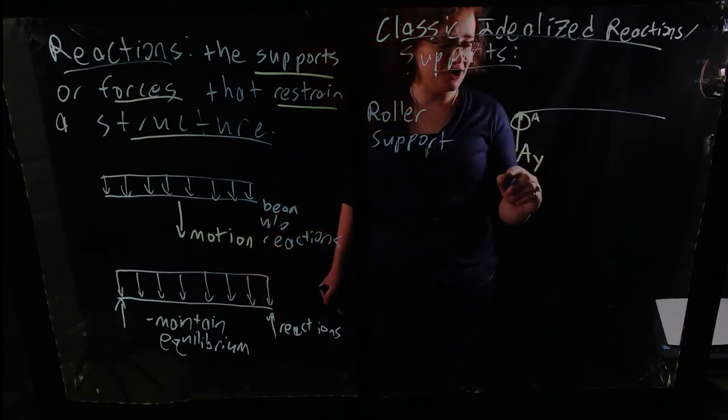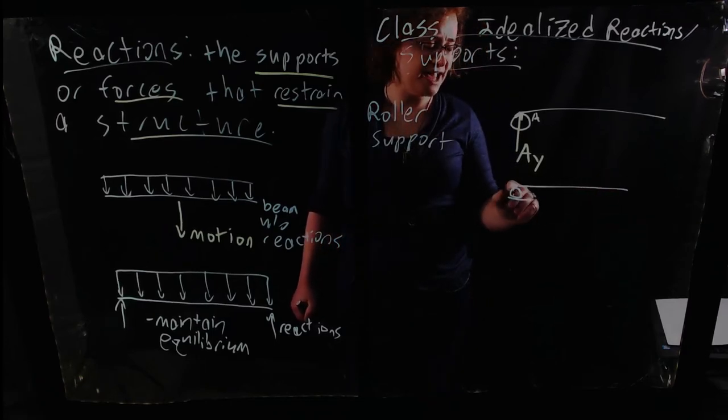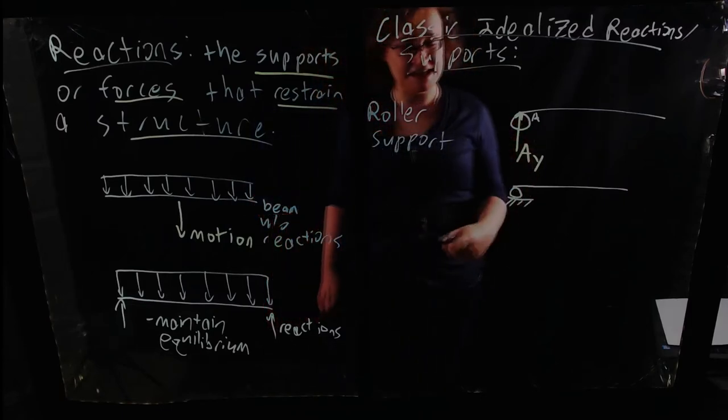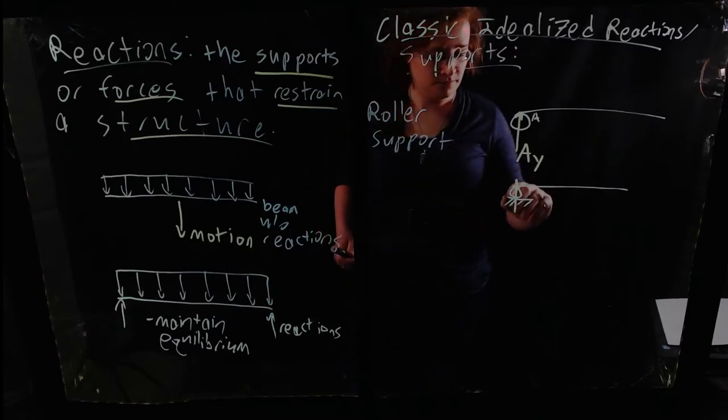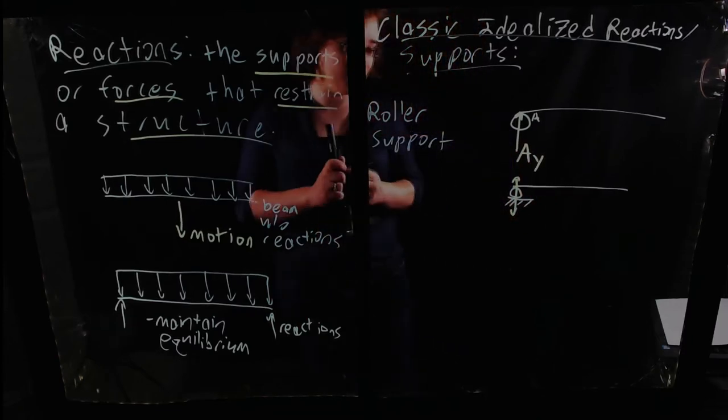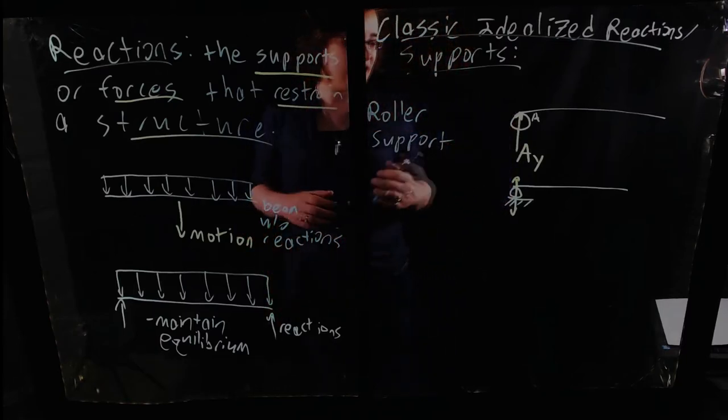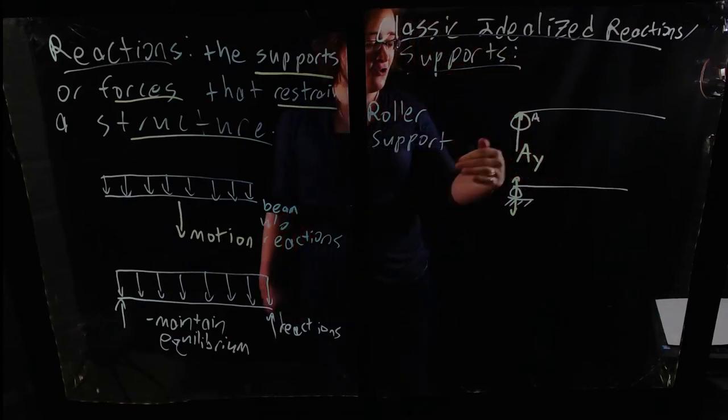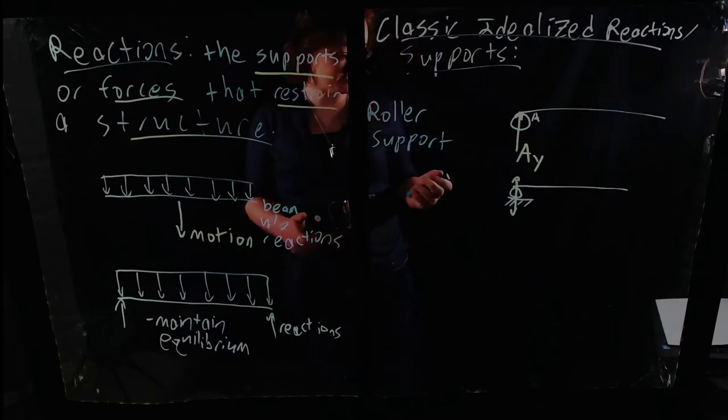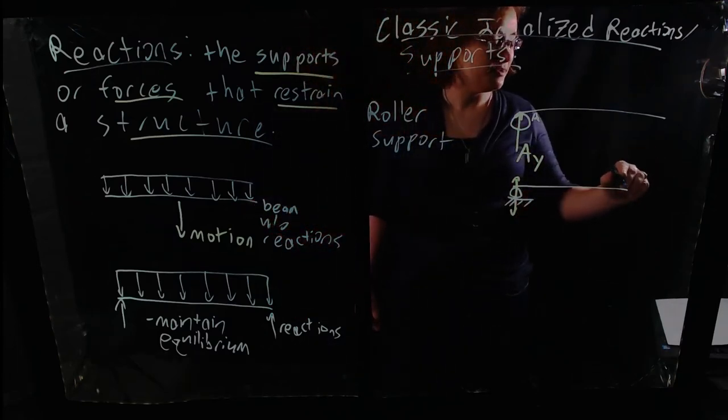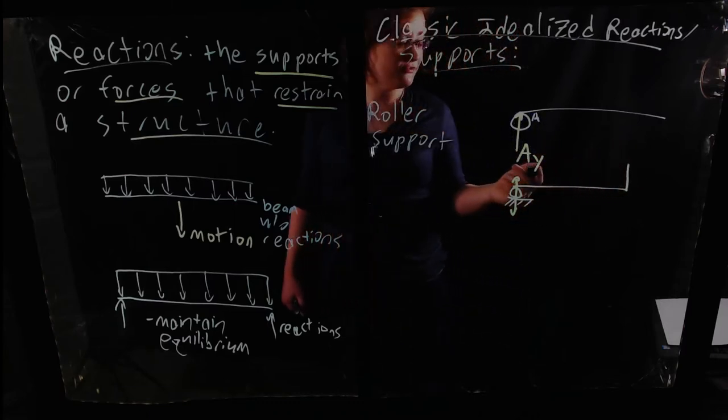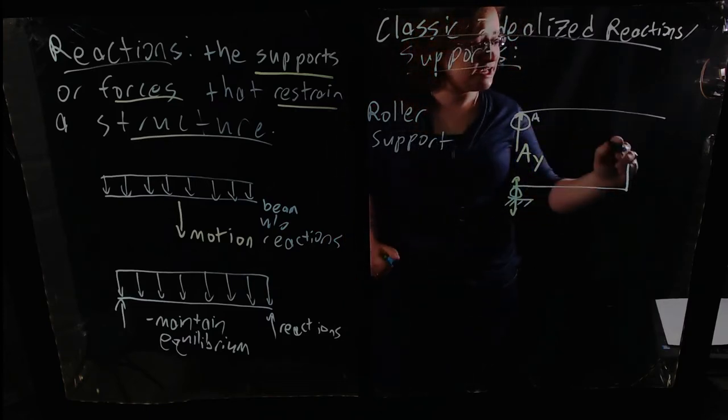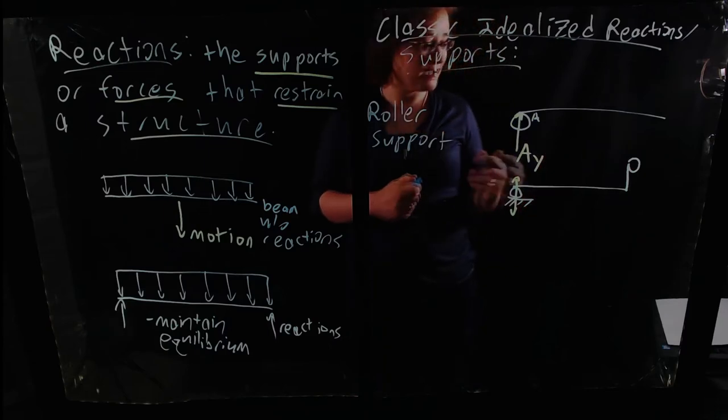And there's many ways you can draw these. You also might draw them like something like that, showing a roller on a surface. If you do show a surface, then that reaction force is going to be perpendicular to the surface. But the key is that it is acting in one direction. And this particular support, this particular type of reaction, is only capable of resisting force in one axis.